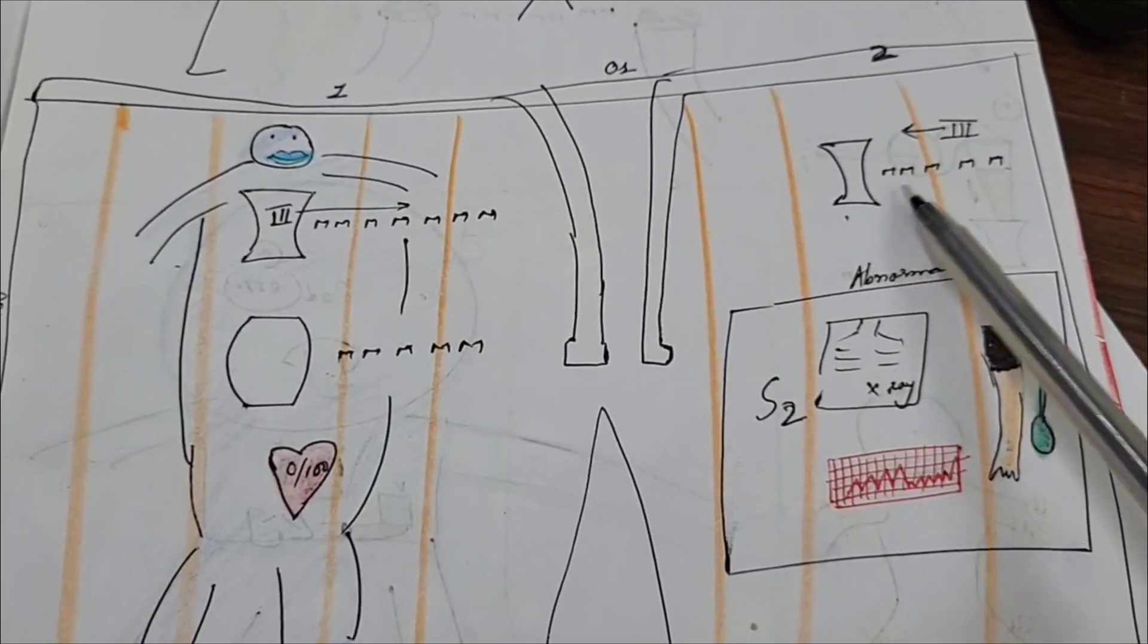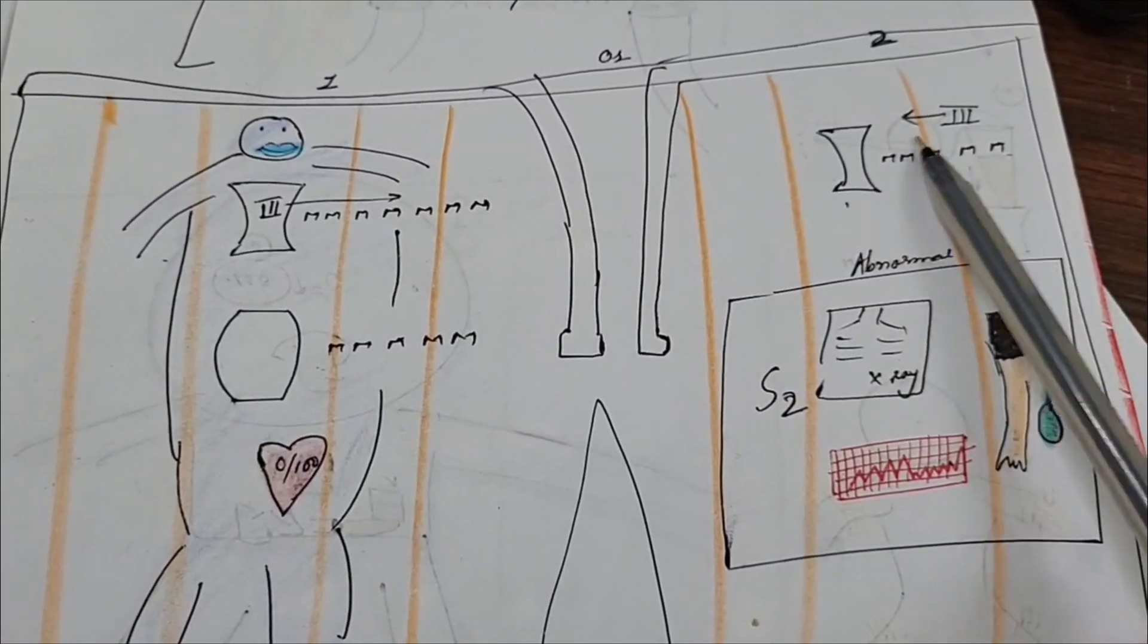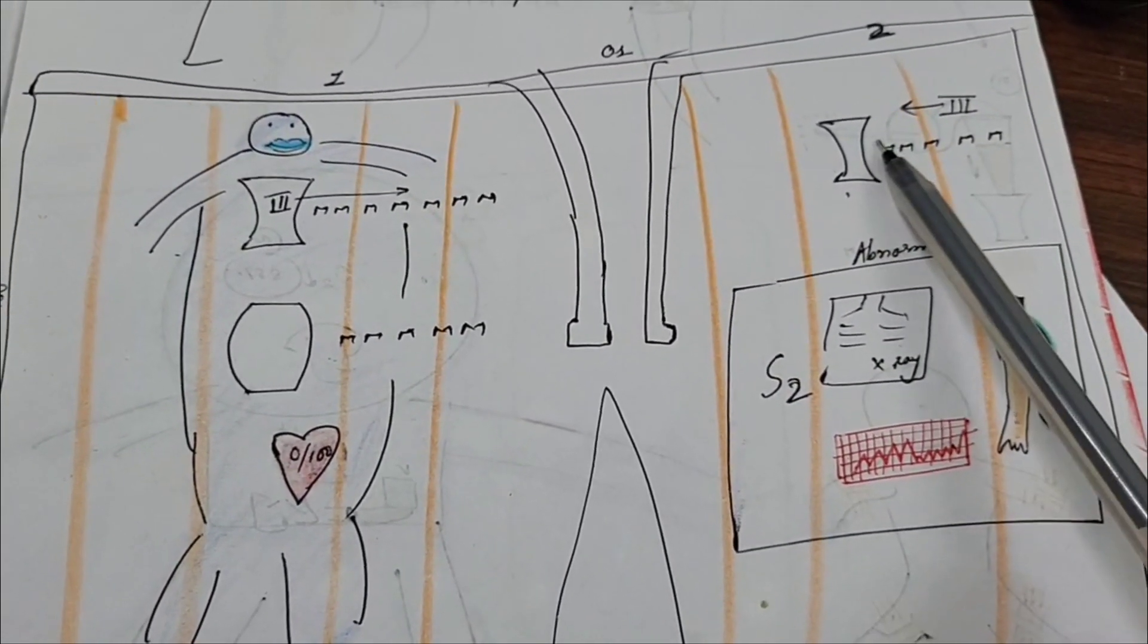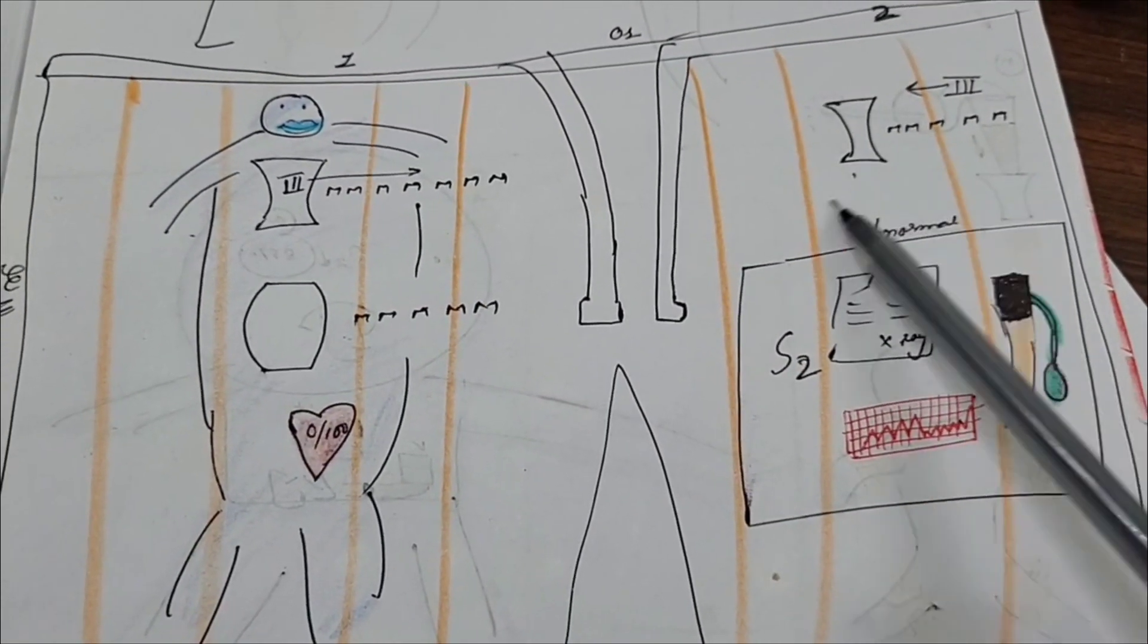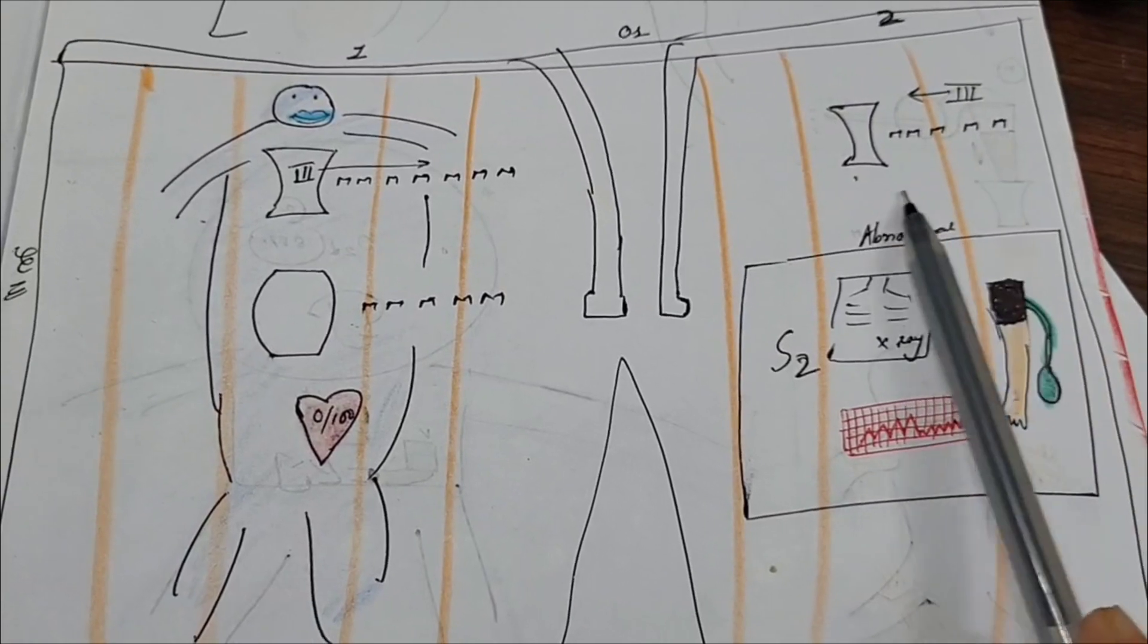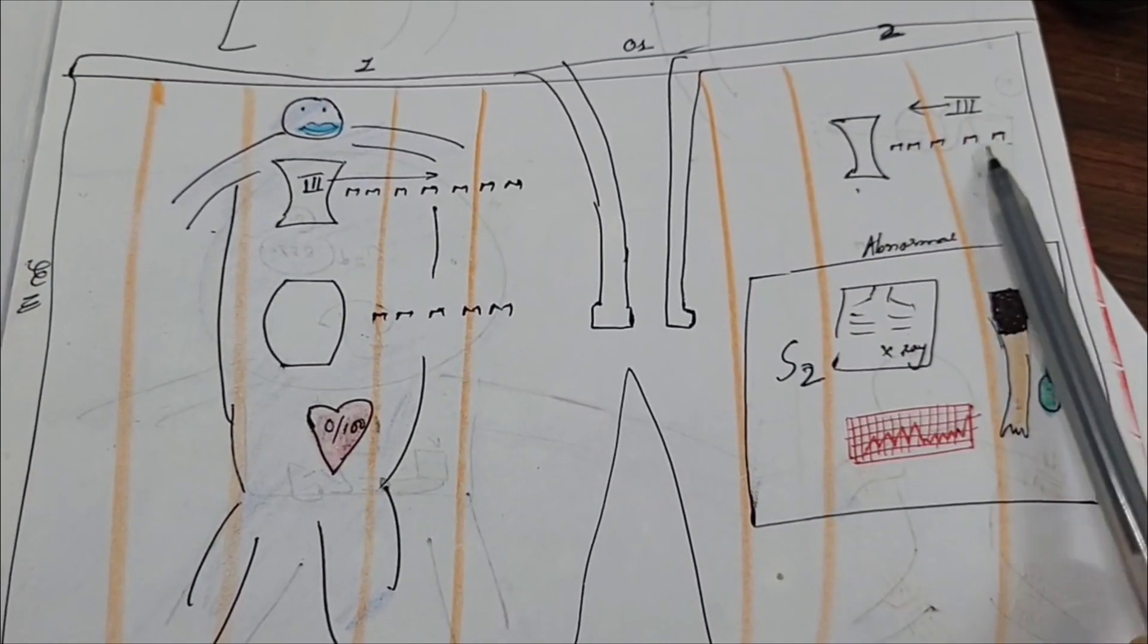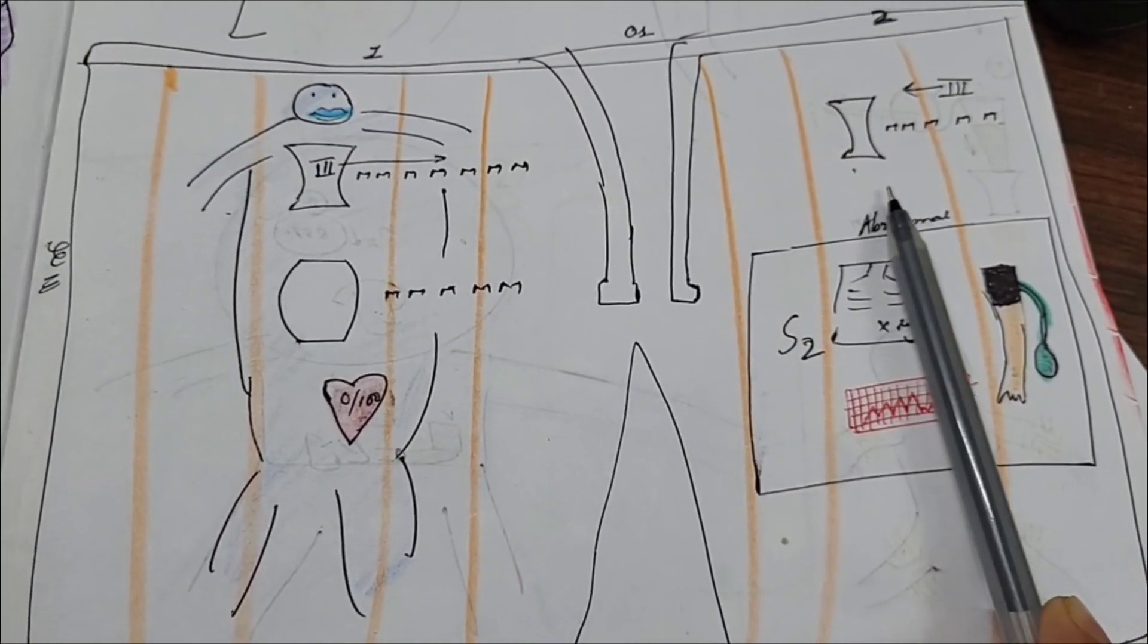Second. If second criteria, any type of systolic murmur that is less than third grade, less than third grade systolic murmur, that would be considered as a minor criteria.